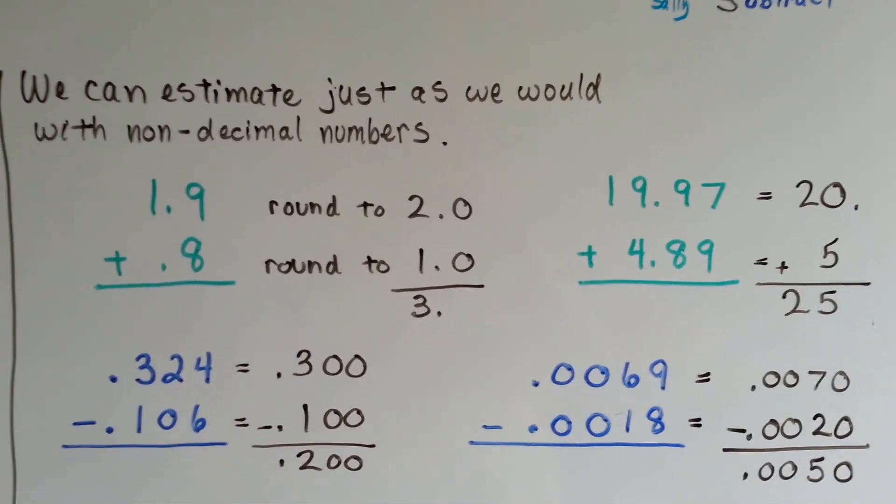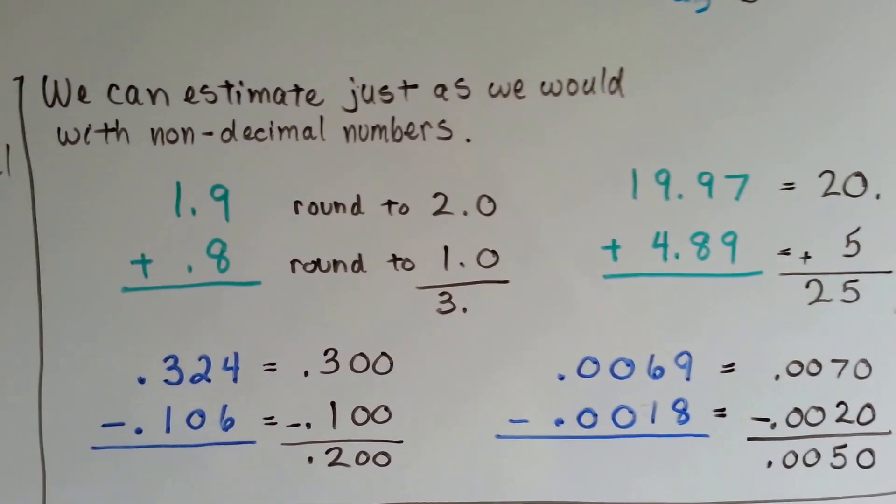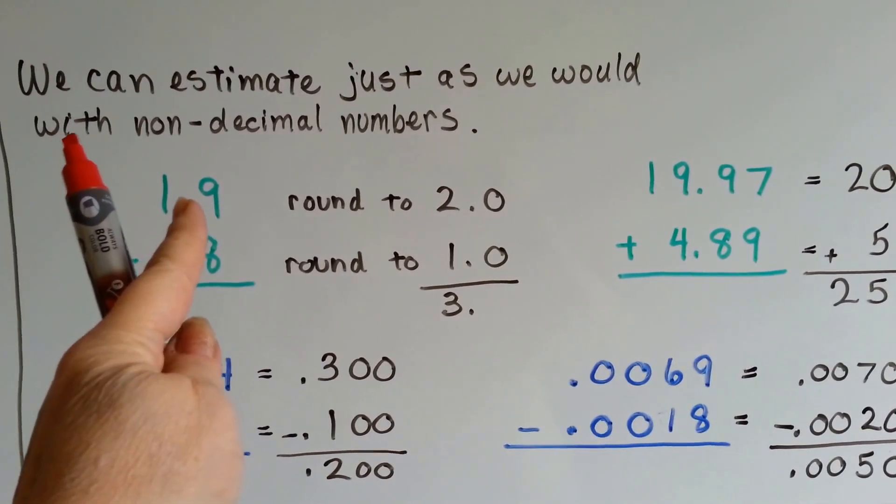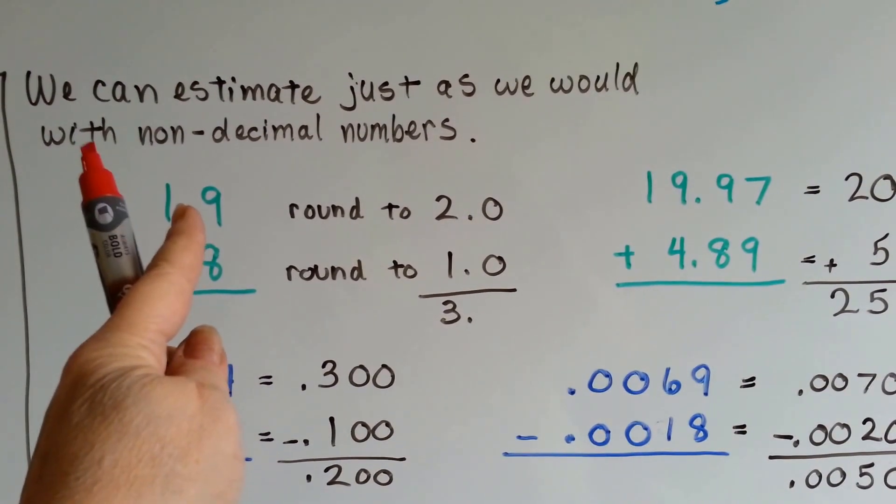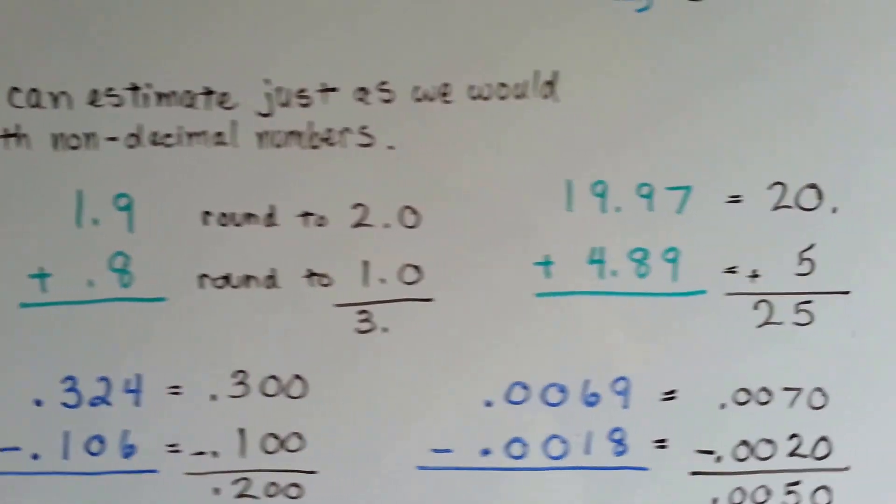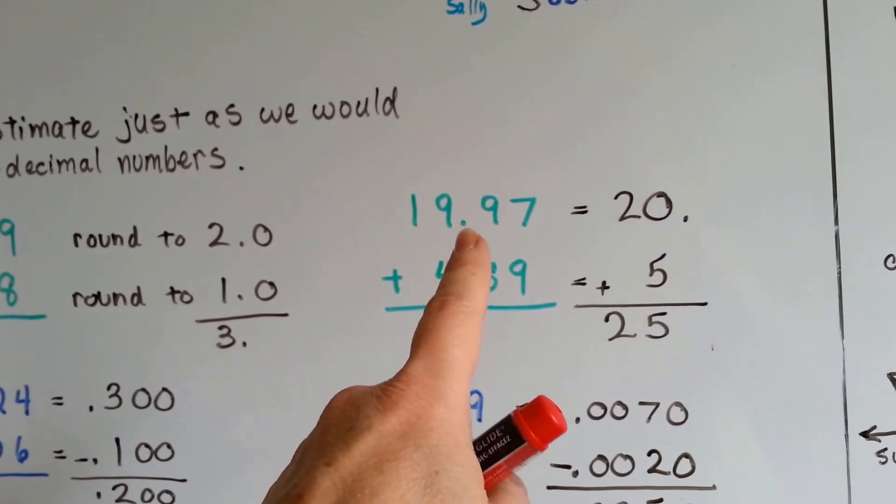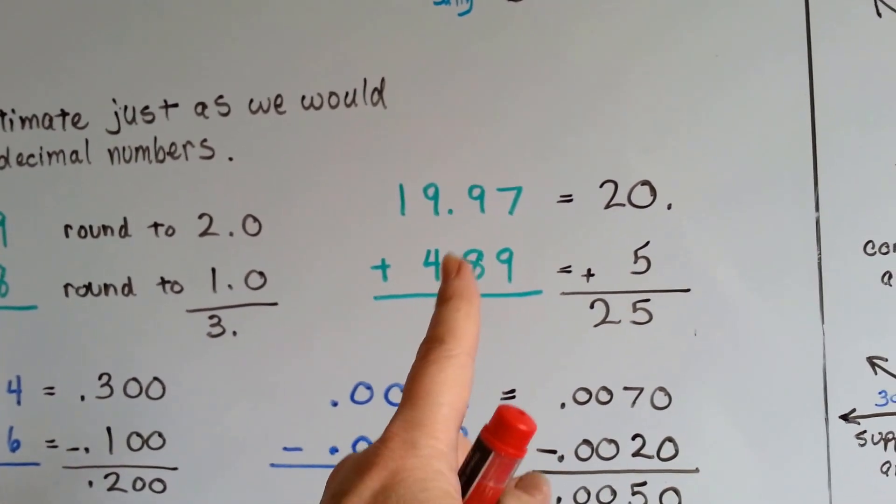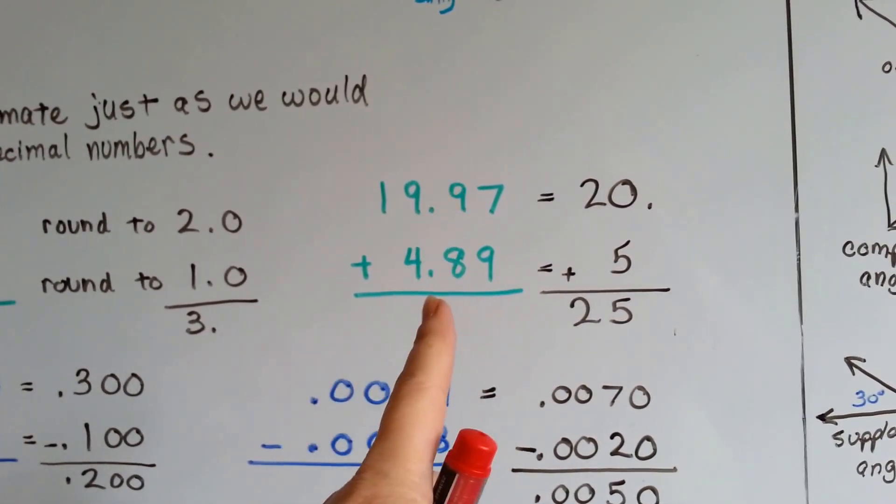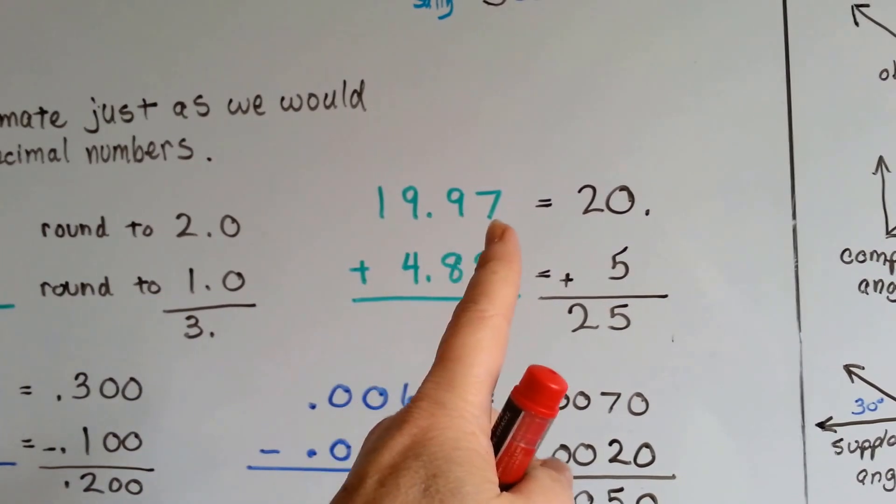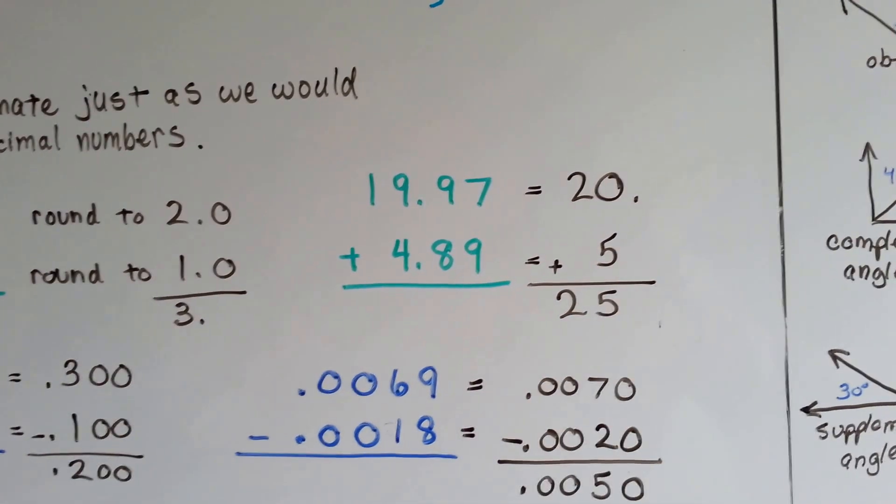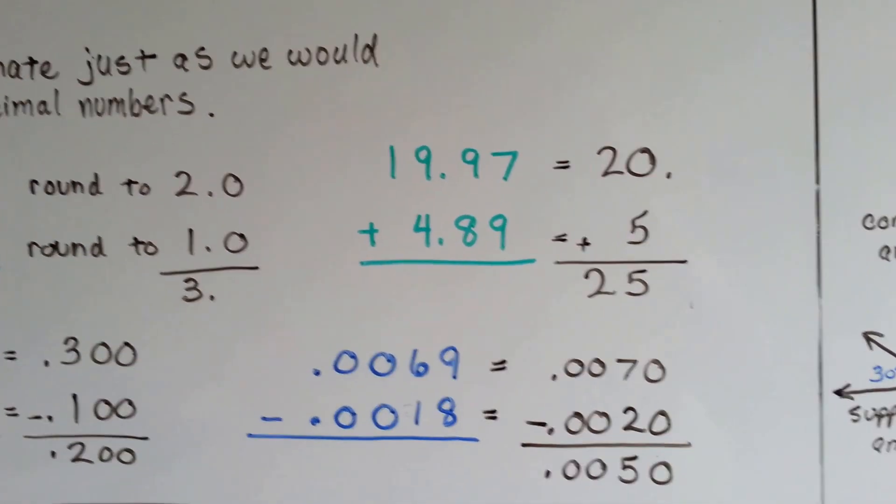We can estimate just as we would with non-decimal numbers. Just put the decimal in. If you have 1.9, pretend like the decimal point isn't there. We can round 19 to 20 and we can round 8 to 10, and we get 3.0, an even 3. If we have 19.97 plus 4.89, we can pretend like the decimal point's not there and just round them up. Or we can do it as if it was money. Like this was 19 dollars and 97 cents and we're rounding it up to 20 dollars, and 4 dollars and 89 cents rounding up to 5 dollars. Our estimate would be about 25 dollars.